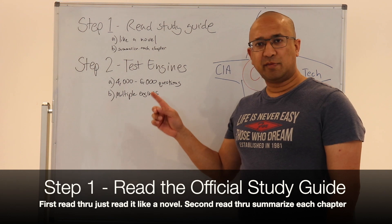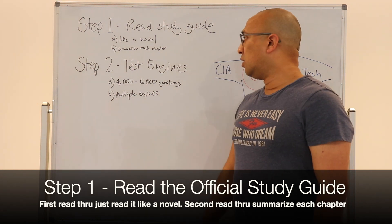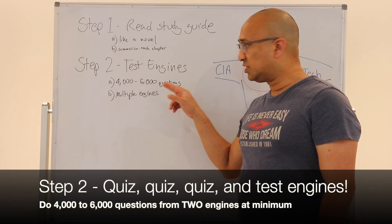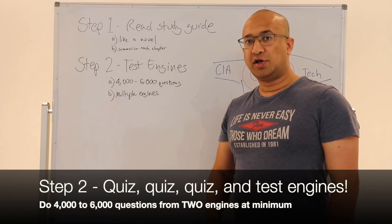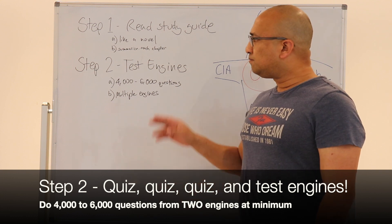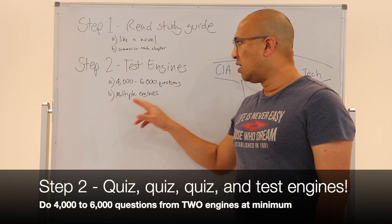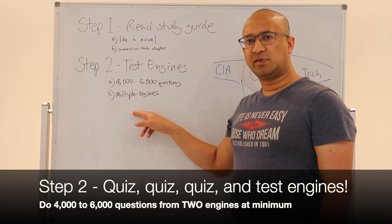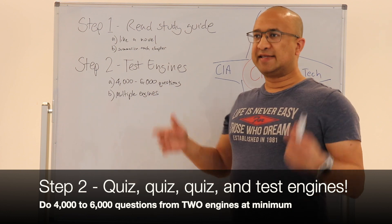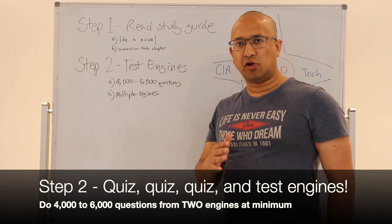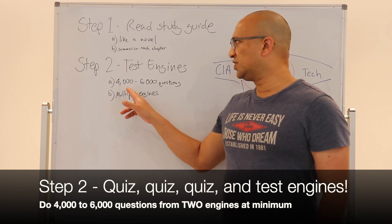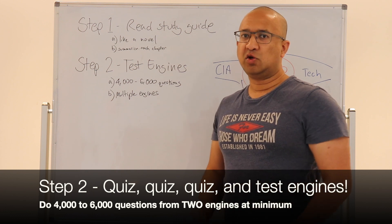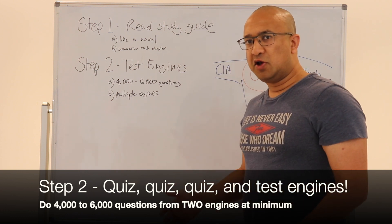Step two: it's all about the test engines. What you need to do is aim to complete four thousand to six thousand questions before you sit the real exam. You need to embed the process of going through a lot of questions. Repetition is the mother of skill — it's like swinging a bat. You've got to do it a lot of times before you do it right.